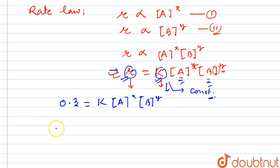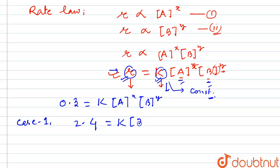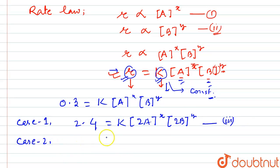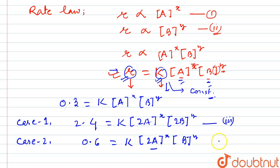Our first case is when the rate of reaction changes to 2.4, and the concentration of A is doubled as well as the concentration of B is doubled. Let this be equation three. Our second case is when the rate changes to 0.6, and this equals K times the doubled concentration of A, with B remaining the same. Let this be equation four, and the baseline equation as equation five.